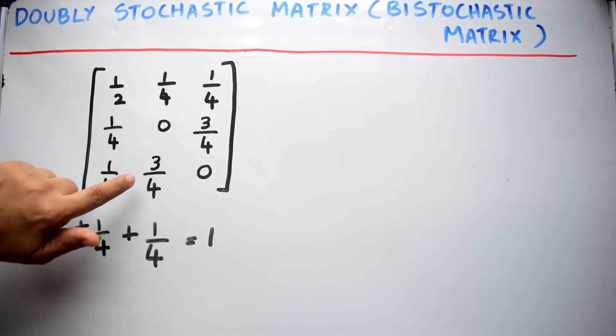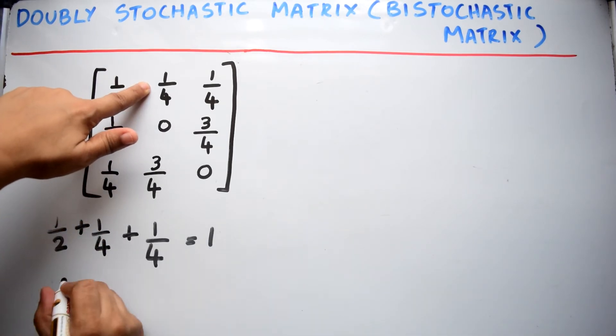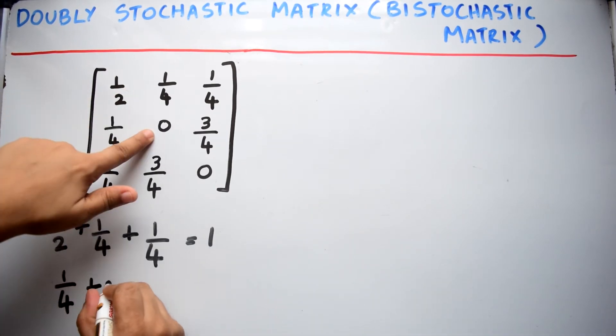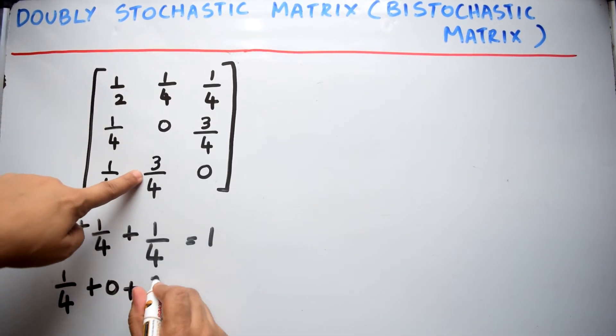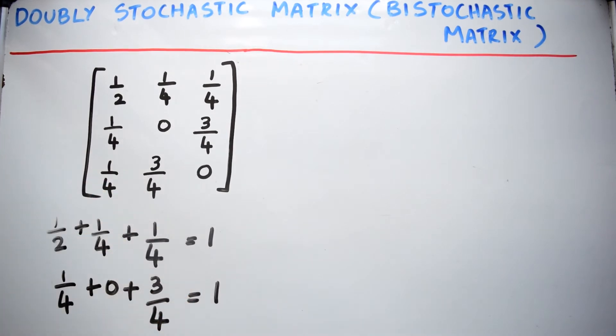Similarly, in the second column, if you add 1/4 plus 0 plus 3/4, you will get the sum as 1.